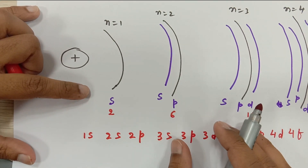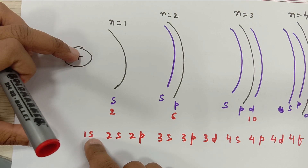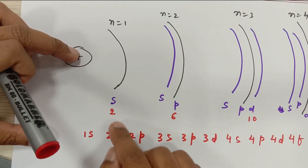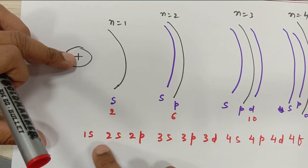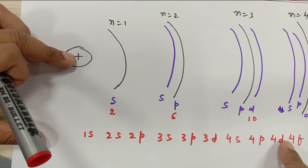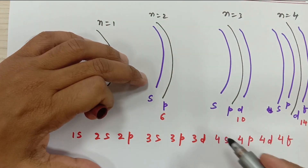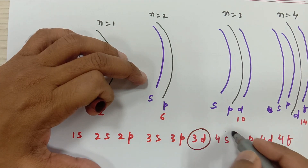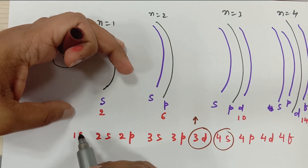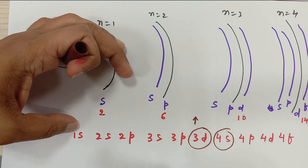The rule is that electrons always get filled in the lowest energy orbit first, and then transfer to higher energy orbits once the lower one is filled. The lowest energy orbit is 1S. There is an exception: compared to 4S, 3D has larger energy. So electrons fill in the order: 1S, 2S, 2P, 3S, 3P, 4S, and then 3D.